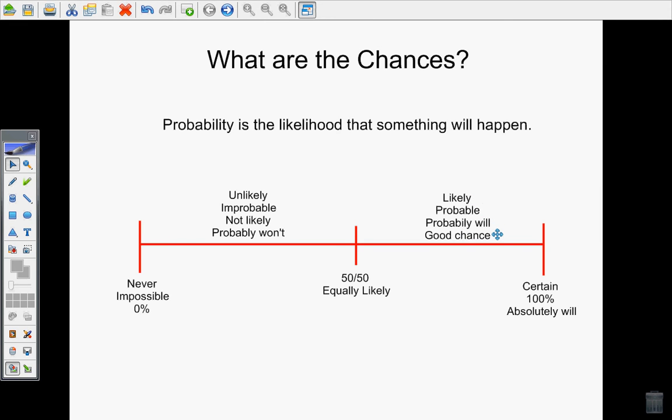Let's think of some examples for each one of these. Something that is impossible or never will happen would be rolling a 7 on a die. There's only the numbers 1 through 6. It is impossible for you to get a 7 with just one die.